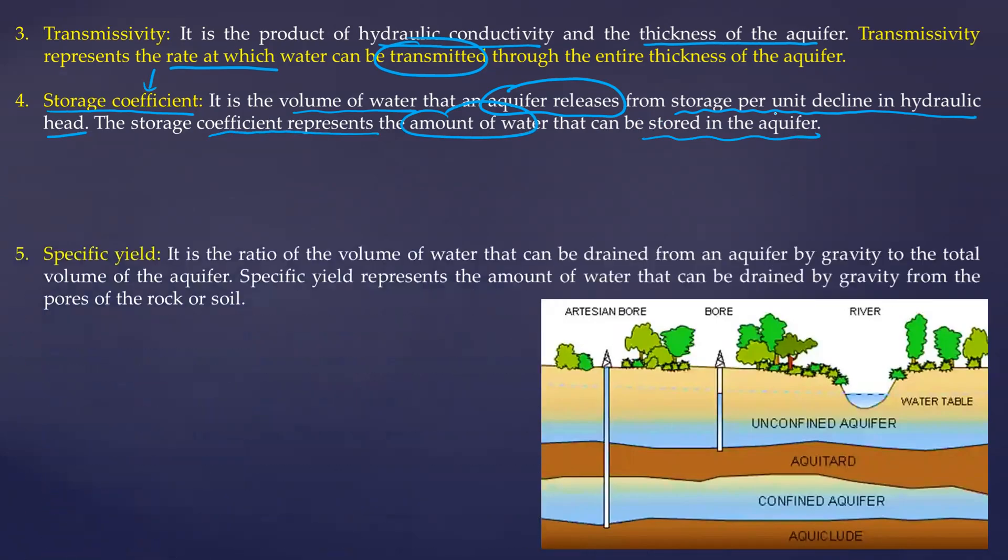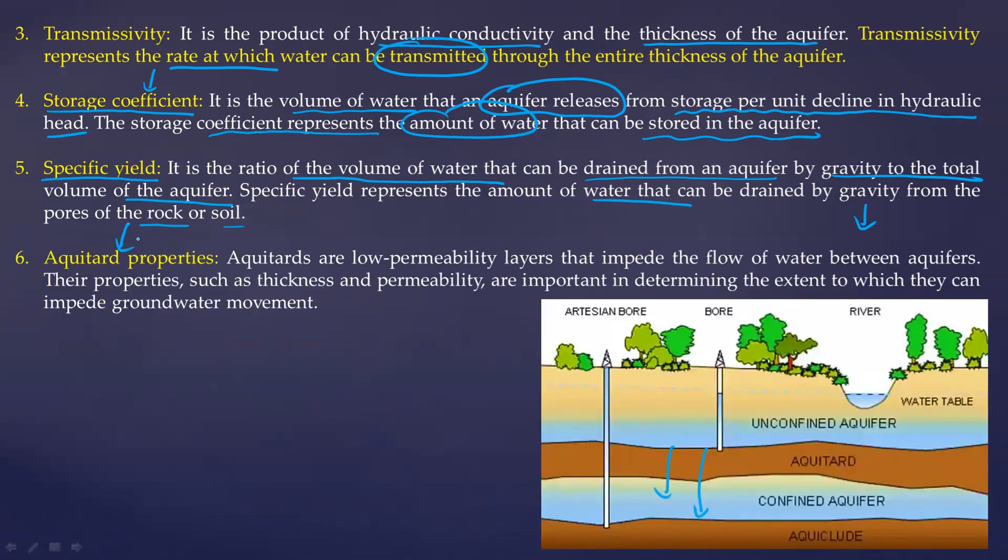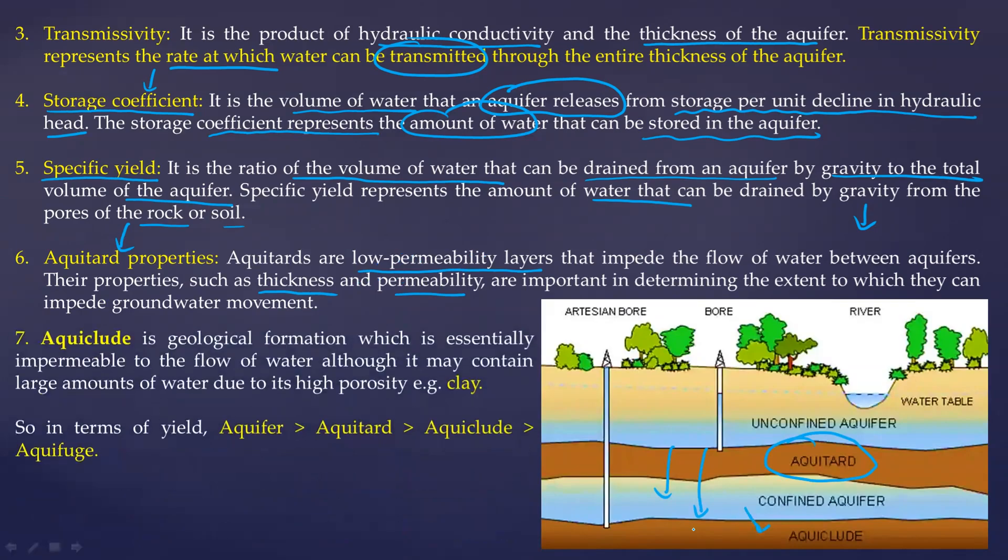Now look at specific yield. Specific yield is the ratio of volume of water that can be drained from an aquifer by gravity to the total volume of aquifer. In simple language, it represents amount of water that can be drained by gravity from the pores of the rock or soil. Then we have something called aquitard property. What is an aquitard? You see this layer here, aquitard. So this is low permeability layer. These layers are very important to hold on to these aquifer and their properties. Thickness and permeability is the determining factor.